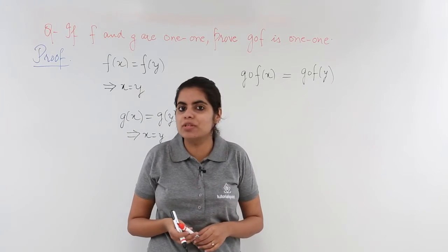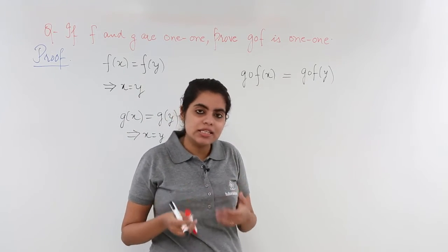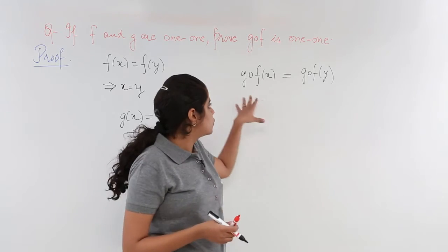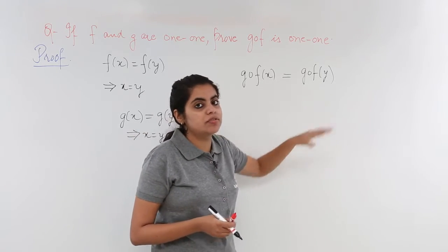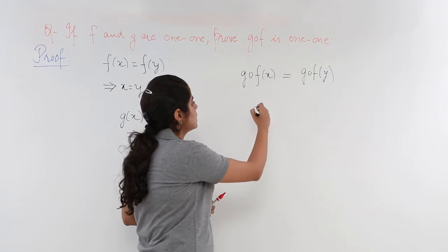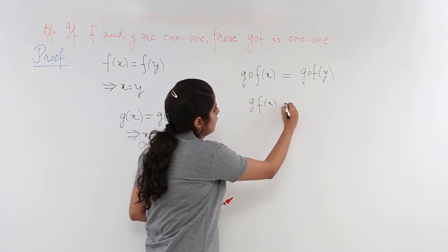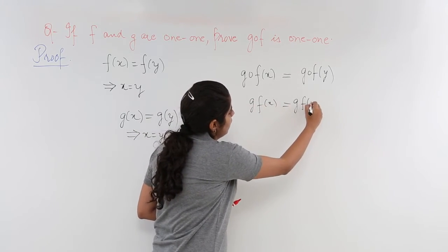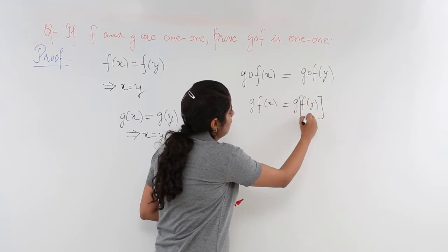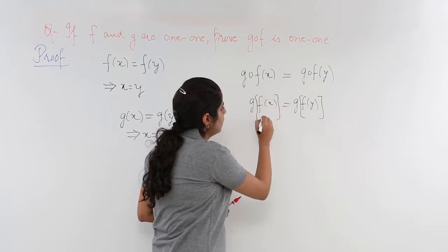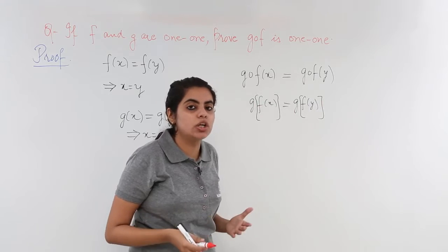This is the technique we are going to follow. Now gof(x) and gof(y) should be again simplified as g of f(x), and here it should be g of f(y). How did we get this? We got this with the knowledge of composition of functions.